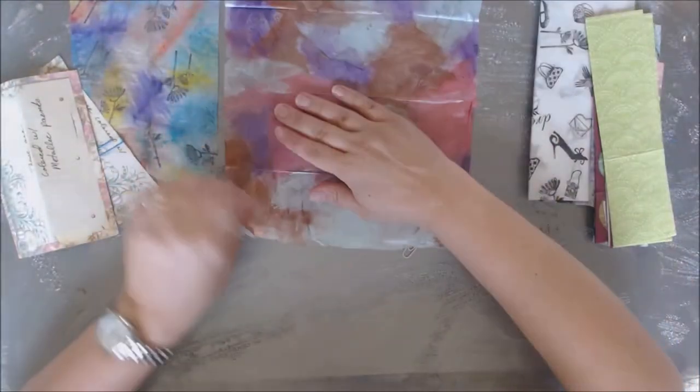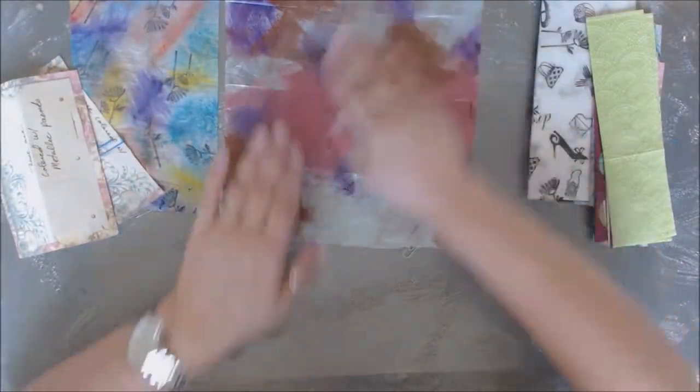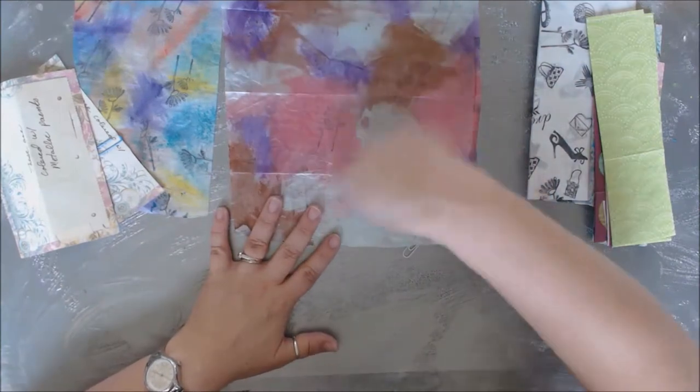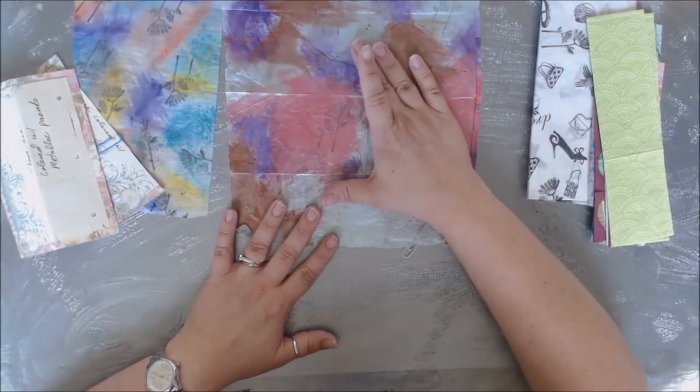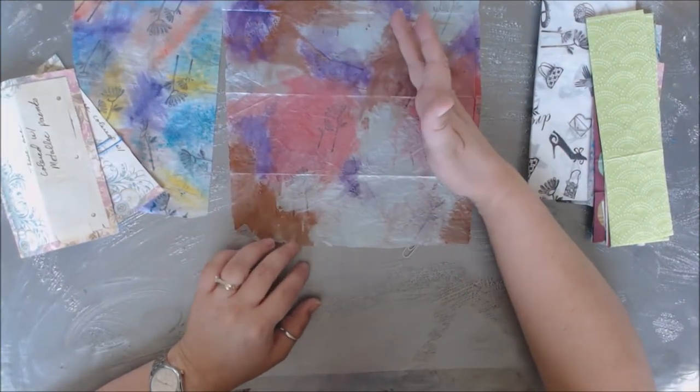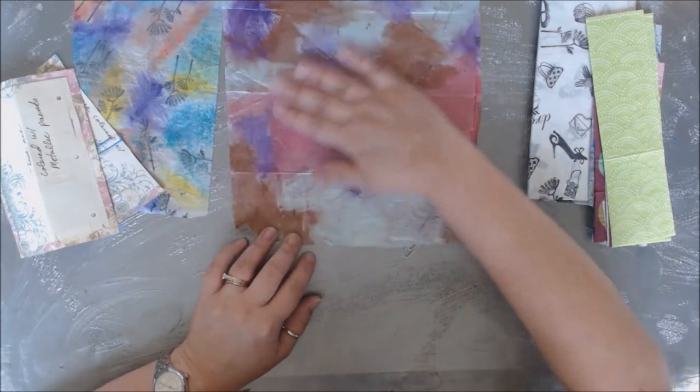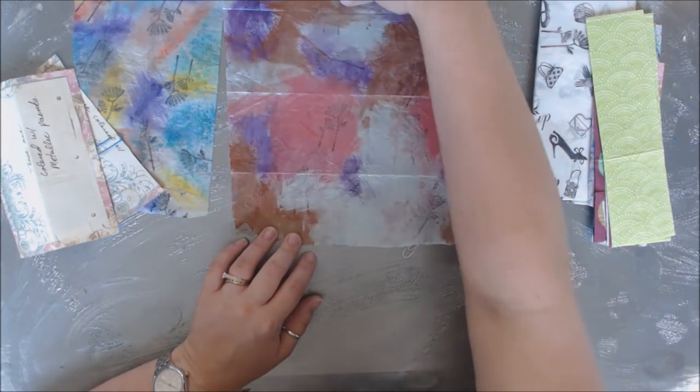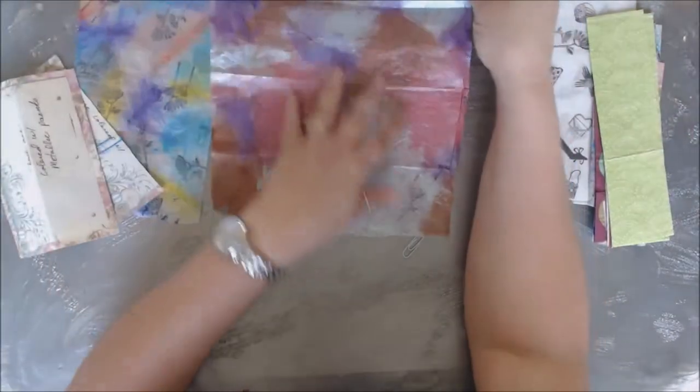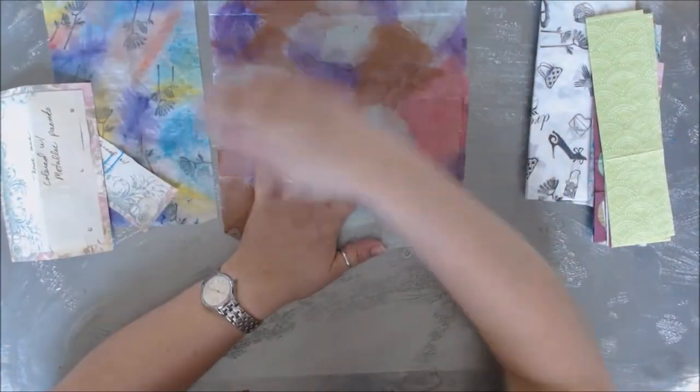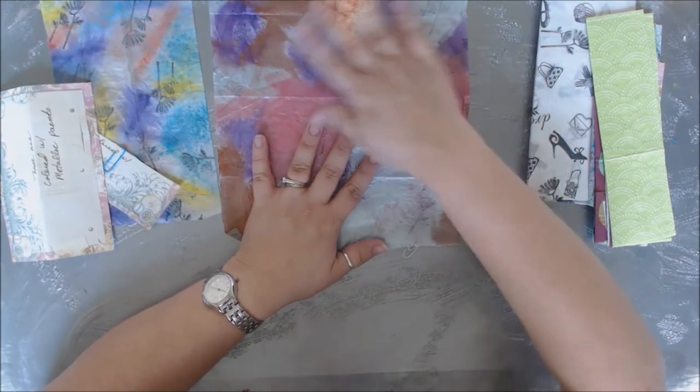Here's another one that she did with these really pretty metallic paints. It looks like she just went through and painted. She probably stamped first - no, I would say she stamped second because these are too dark of a color. I'm not sure which one she did first, but she probably stamped first and then painted over because some of them look like they got painted over.